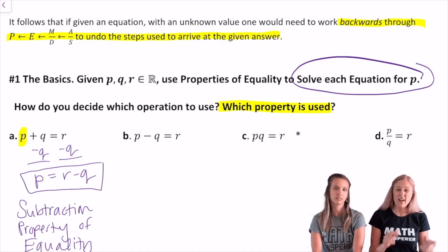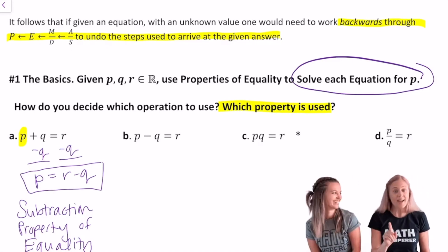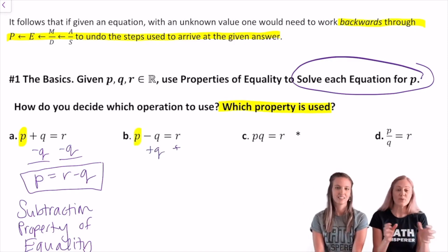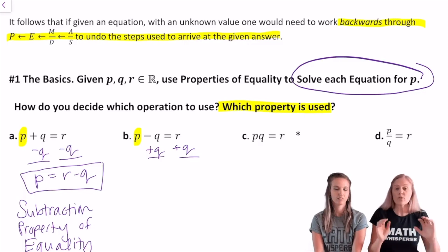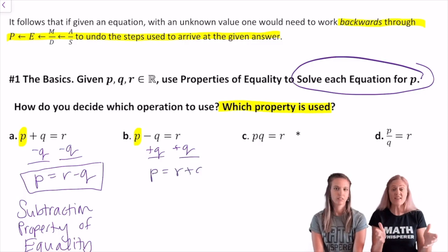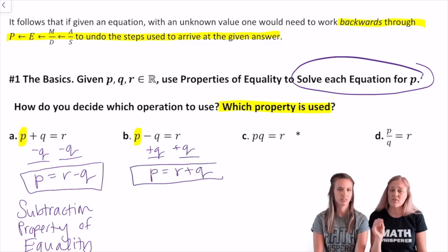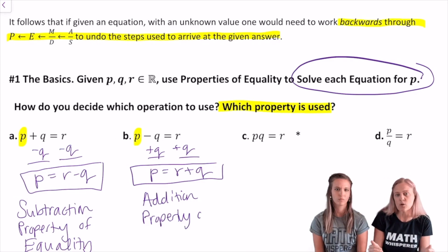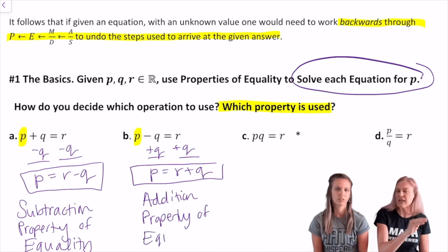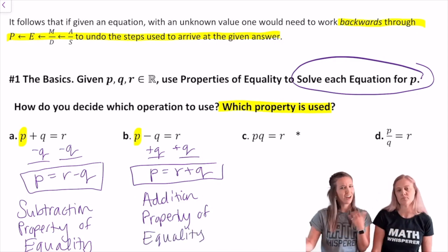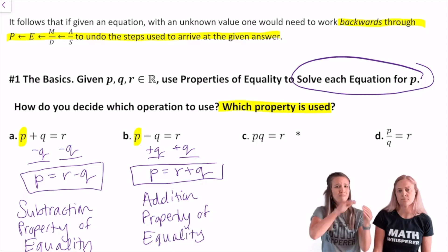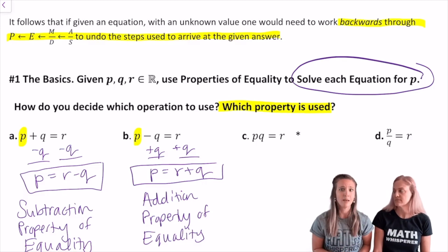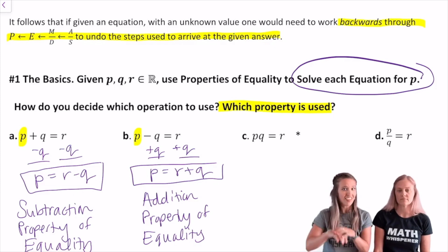Go ahead and do that next one — pause and we're back. Of course, we want to use the inverse operation. For minus q, we're going to add q to both sides, and you have to write it on both sides or you've miscommunicated. We have the addition property of equality: if I add the same thing to both sides of the equation, it's still equal. Your final answer here is p equals r plus q. You might think it's silly to emphasize all these little steps when it seems intuitive, but showing these steps is how you communicate mathematically.